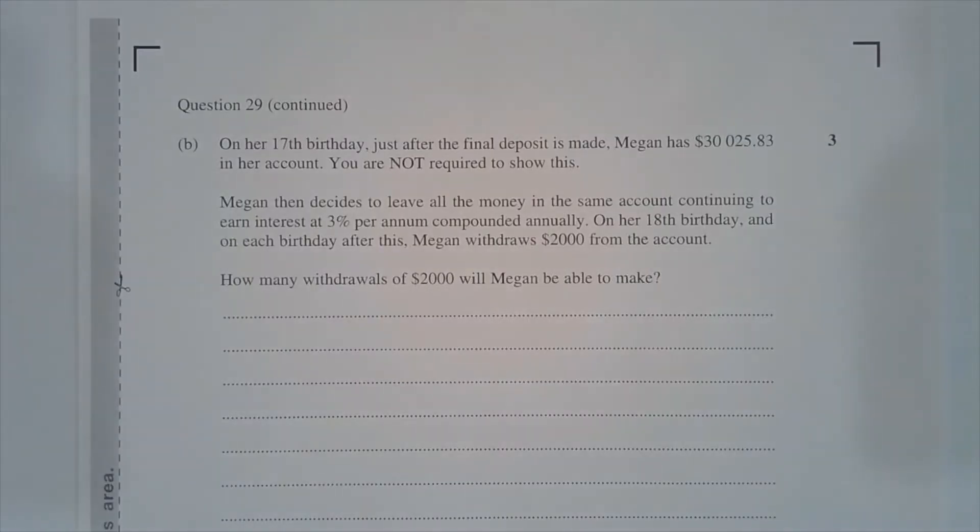Part B. On her 17th birthday, just after the final deposit is made, Megan has $30,025.83 in her account. You are not required to show this. Megan then decides to leave all the money in the same account, continuing to earn interest at 3% per annum compounded annually. On her 18th birthday, and on each birthday after this, Megan withdraws $2,000 from the account. How many withdrawals of $2,000 will Megan be able to make?